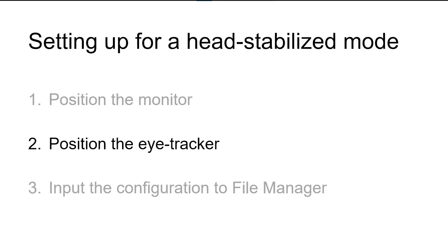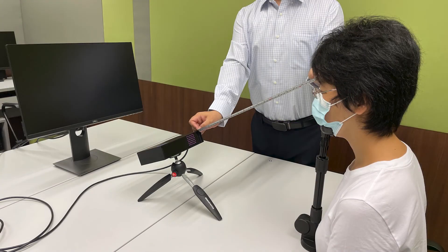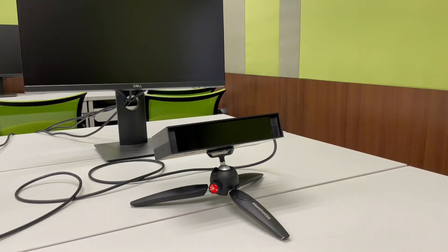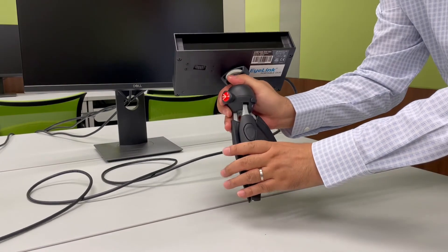Second, position the eye tracker. Put the eye tracker between a participant and the screen. Make sure the camera is around 45 centimeters from the eyes and it does not block the screen. We can use the switch to adjust the height.